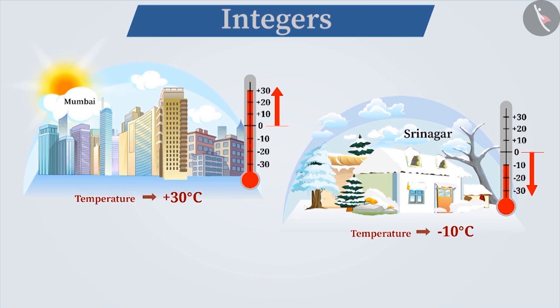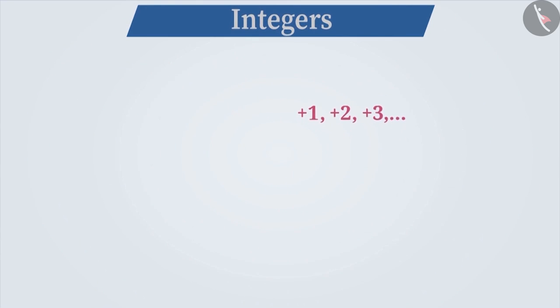If a number is expressed with a plus sign, it's called a positive number. Similarly, if a number is expressed with a minus sign, it is called a negative number. The group of all positive numbers, negative numbers and 0 are called integers.